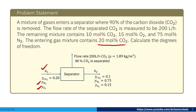The separated carbon dioxide flow rate is 200 liters per hour and the density is given as 1.89 kg per cubic meter. The outlet flow rate N₂ is unknown. In the remaining outlet gas mixture after separation of carbon dioxide, y_CO₂ is 0.1, y_N₂ is 0.75, and y_O₂ is 0.15 — all of which are given.